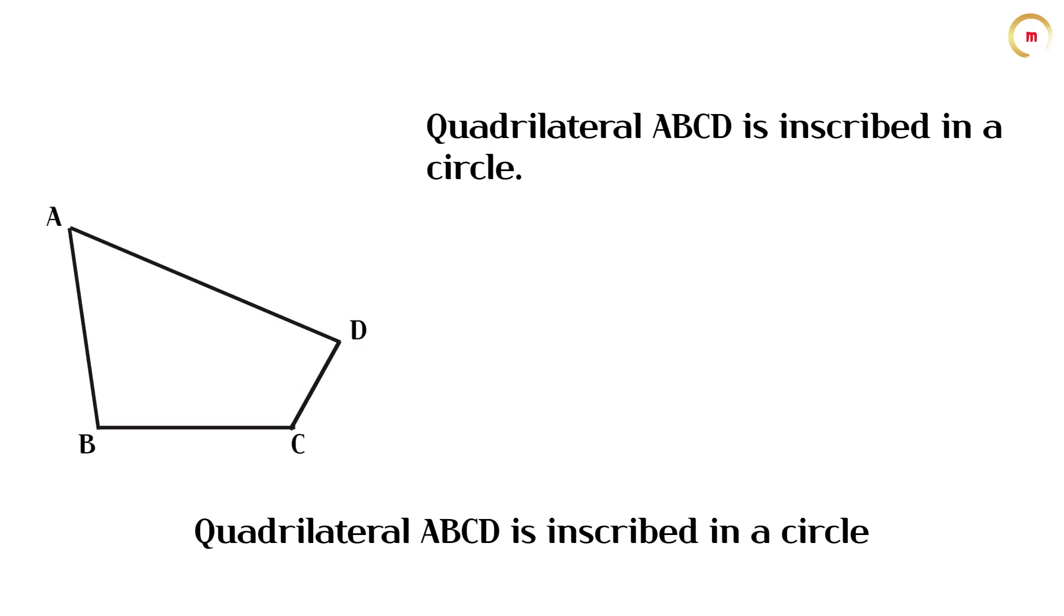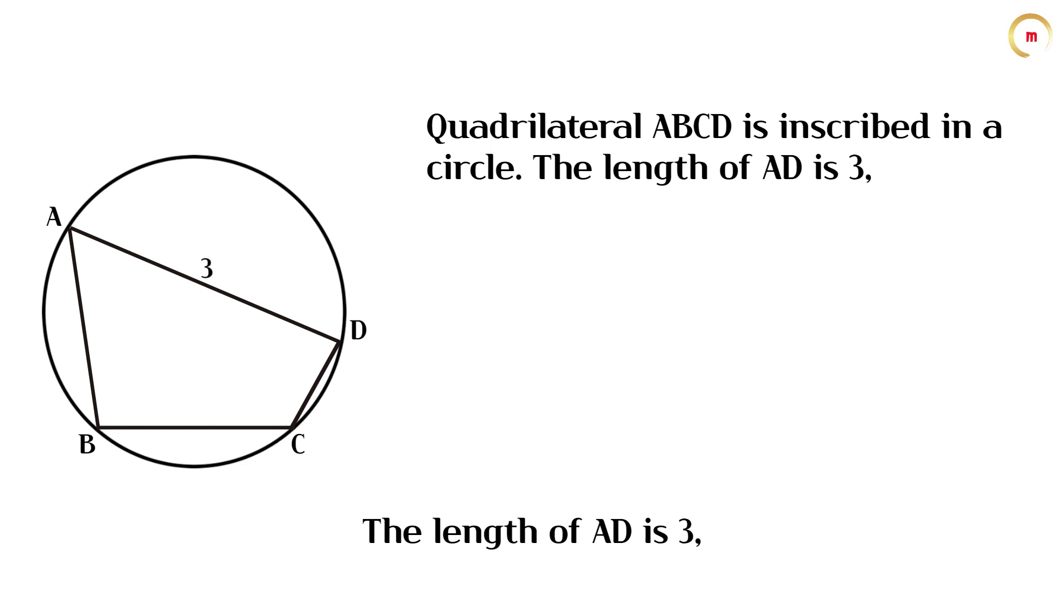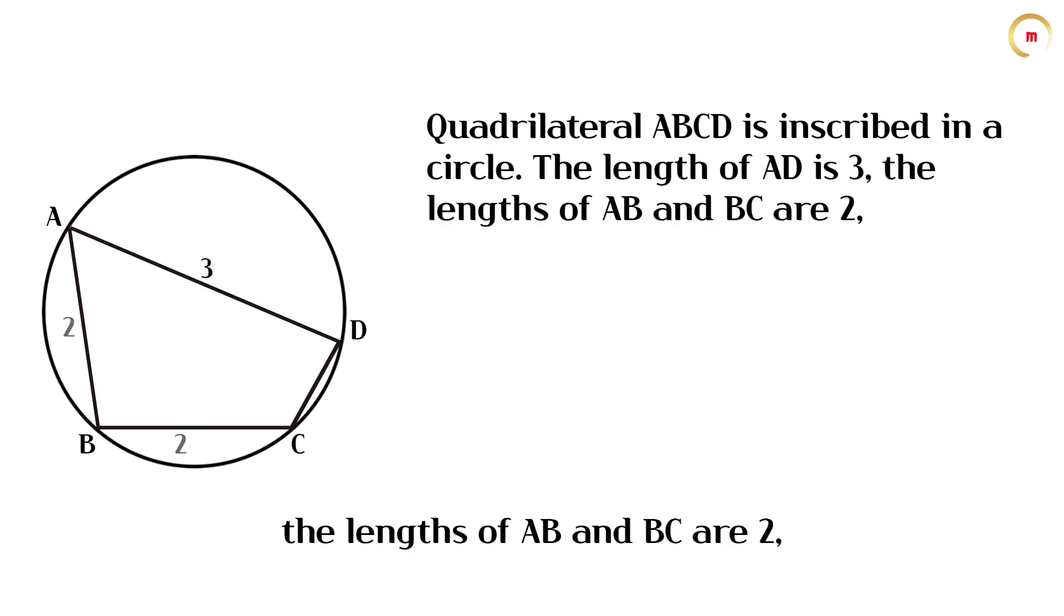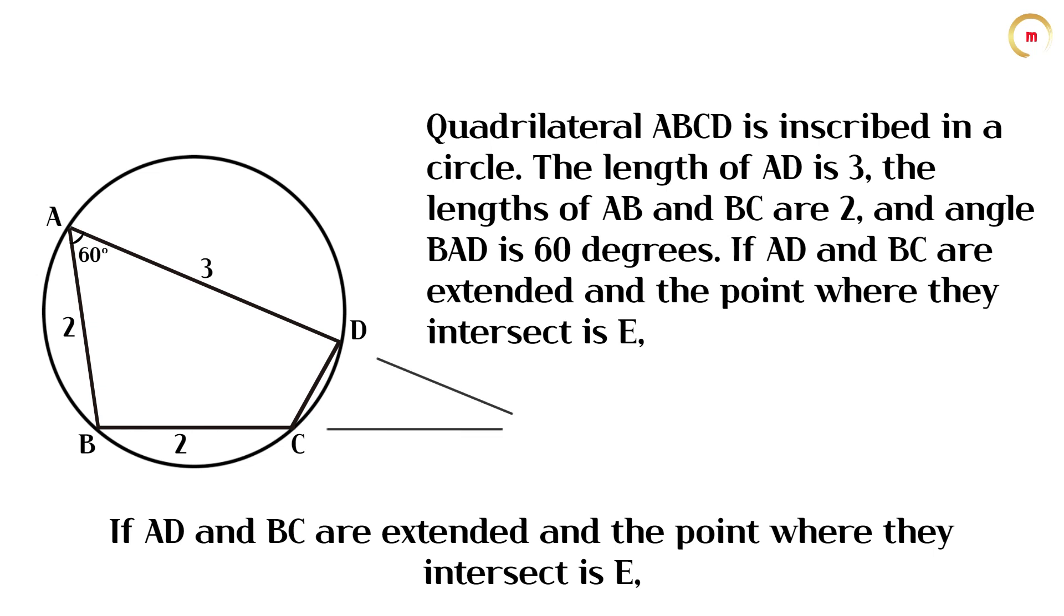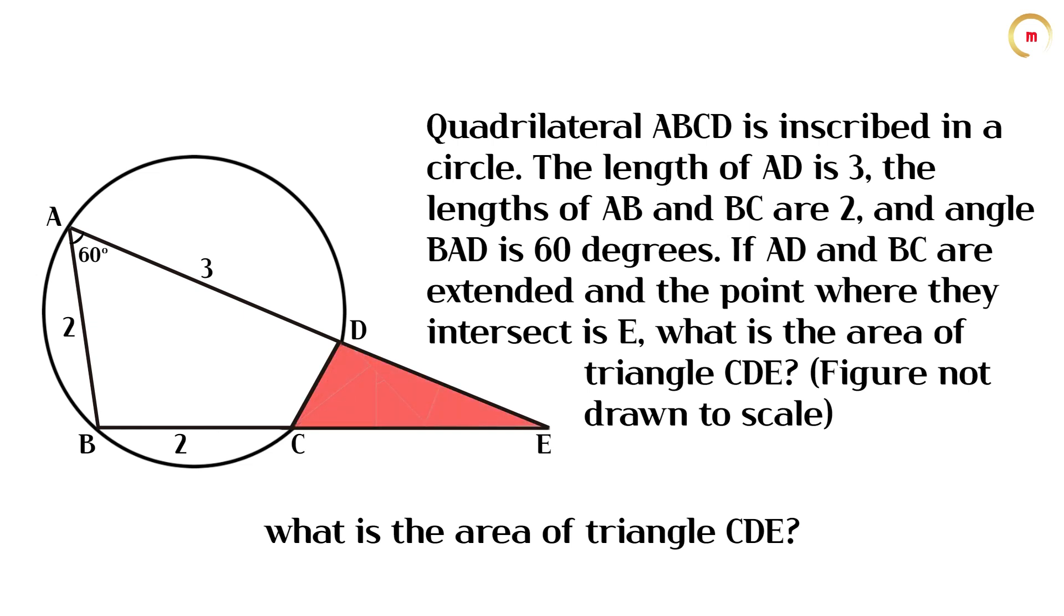Quadrilateral ABCD is inscribed in a circle. The length of AD is 3. The lengths of AB and BC are 2, and angle BAD is 60 degrees. If AD and BC are extended and the point where they intersect is E, what is the area of triangle CDE?